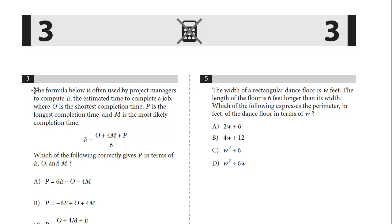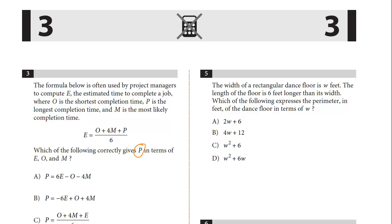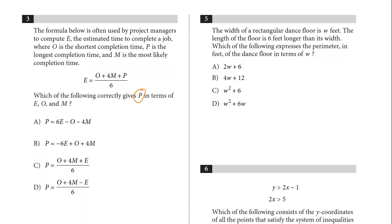Problem 3: The formula below is often used by project managers to compute E, the estimated time to complete a job, where O is the shortest completion time, P is the longest completion time, and M is the most likely completion time. Here's the equation. Which of the following gives P in terms of E, O, and M? I really wouldn't even pay attention to what these variables mean. We just have to solve for P. We've seen this phrase before - P in terms of - we need to isolate P.